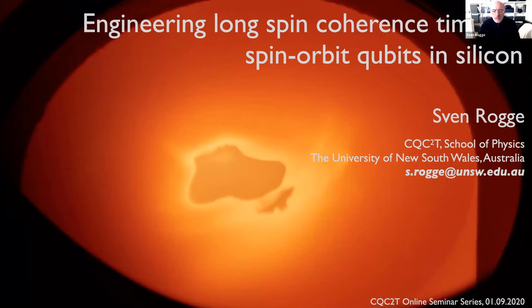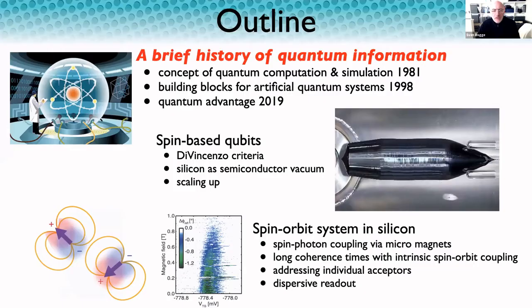Good afternoon. It's a great pleasure to give this seminar. I will be talking about engineering long spin coherence times for spin-orbit qubits in silicon. Before I dive in, a brief outline: I've structured the talk in three parts. We'll first talk about a brief history of quantum information, the early days in the 80s with Feynman basically kicking this off. Fast forward to the late 90s for the first visionary building blocks for actual quantum computing hardware, and then finally where we are right now with quantum advantage.